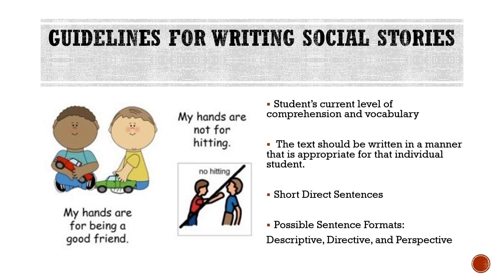This is especially important when writing for a student that has visual impairments. The second guideline is that the story needs to be written in short, direct sentences. Typically, there are three different formats of sentences used in social stories: descriptive, directive, and perspective. Each type of sentence serves a specific function within the story, and we're about to look briefly at how these three types meet the needs of students based on their function.